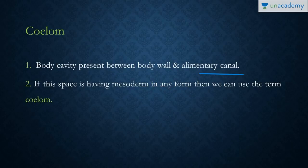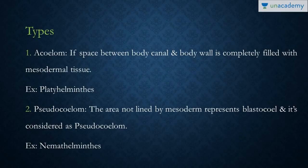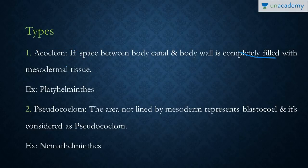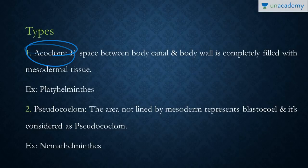There are various types. First, the acoelomate. If this cavity is completely filled with mesodermal tissue, then the organisms are called acoelomates. It includes the most primitive organisms which have a body wall and alimentary canal, though the canal may not be complete. The example is platyhelminthes.